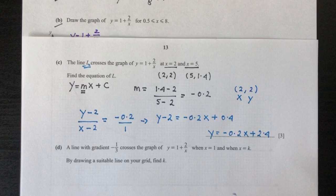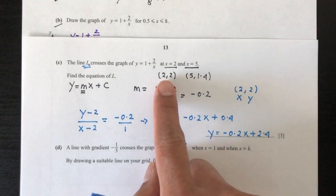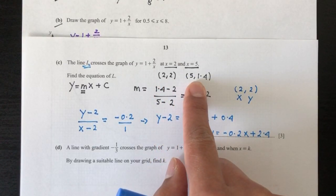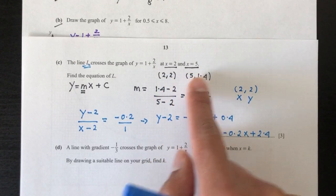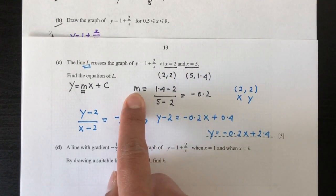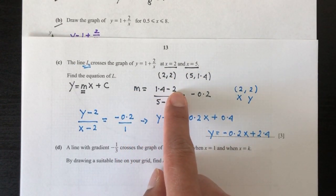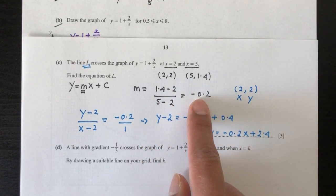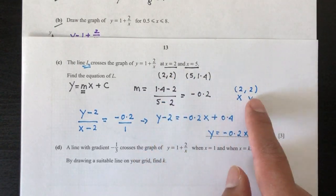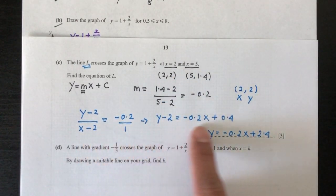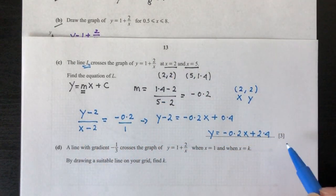So just to recap, the way we find line L is to first find the two points that pass on line L. When you have the two points, you can find the gradient by using your formula, which is (y2 - y1) / (x2 - x1). When you have the gradient, you can choose one passing point and you can find the equation just like that. That is for part c.